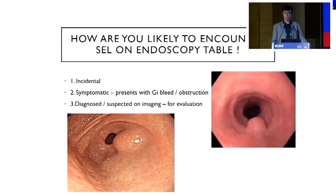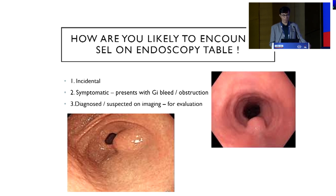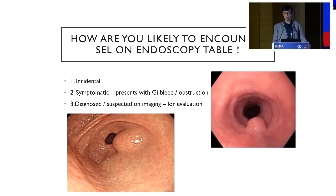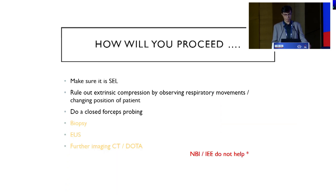On endoscopy, how are you likely to encounter them? Usually they are incidental, but sometimes they can be symptomatic like GI bleed or obstruction. And thirdly, they can also be referred to you for endoscopy once they have been diagnosed on imaging for evaluation.